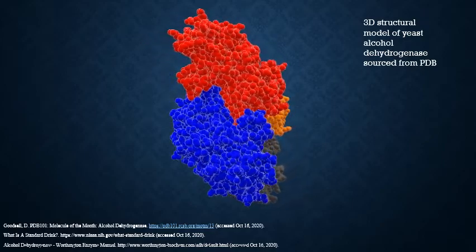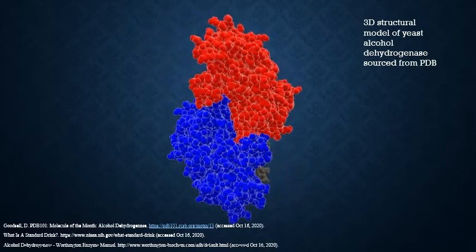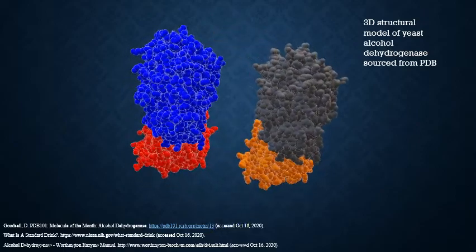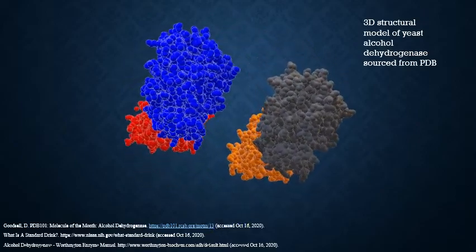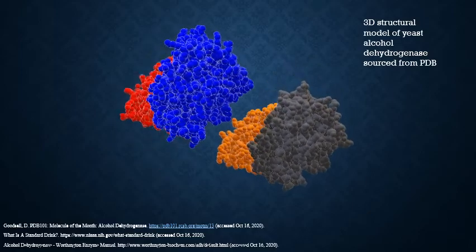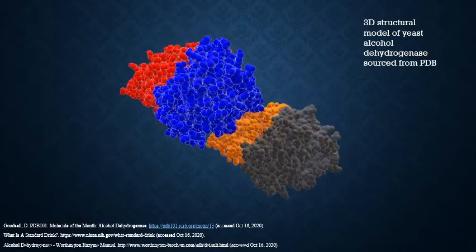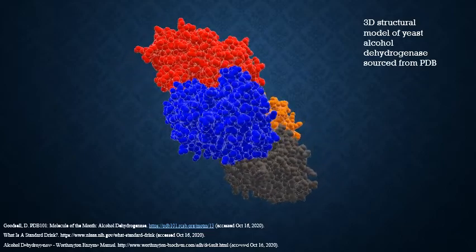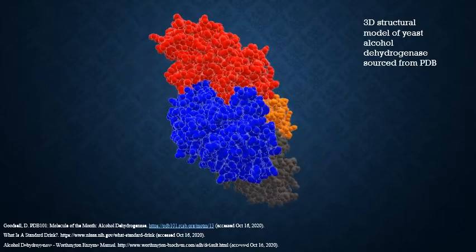Interestingly enough, the ADH in yeasts and other bacteria actually create the ethanol we consume in our beverages. It works similarly as the mammalian version in that the ADH breaks down the sugars it needs for energy, producing acetaldehyde which is then further reduced into liquid ethanol byproduct. The production and destruction of ethanol is controlled by the same enzyme, just in different forms.